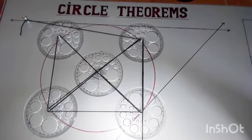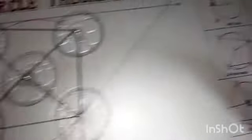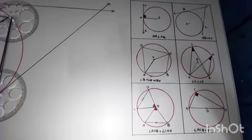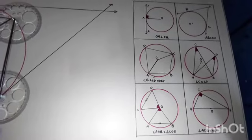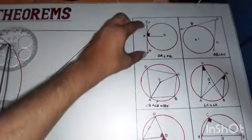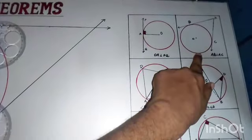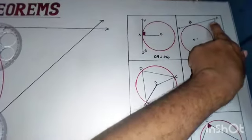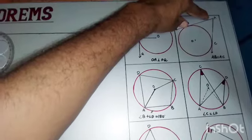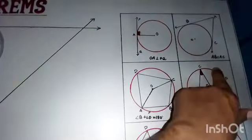Here we can verify all the theorems of the circle. You can see here there are many theorems and we have 6 theorems. This one: a tangent is always perpendicular to the radius. This one: for every point outside there are two tangents and both of the tangents would be equal — this is which equal to MC.